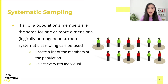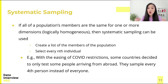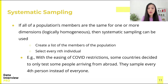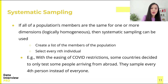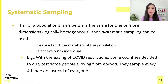For example, with the easing of COVID restrictions, some countries decided to only test some people arriving from abroad. These countries do not expect to see a significant difference between selecting passengers uniformly at random and testing every first passenger who gets off the plane, so they simply test every first person instead of everyone.